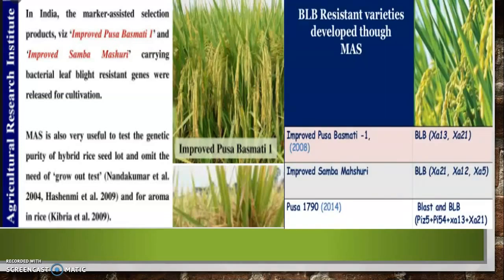In the case of Pusa Basmati 1790, released in the year 2014, it consists of four genes: Pi (blast resistance), Pi5, Pi54, plus Xanthomonas resistance genes xa13 and xa21. We also have Improved Samba Masuri, which consists of XA21, XA12, and XA5.